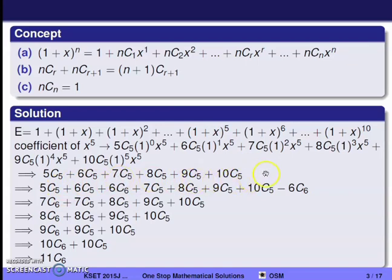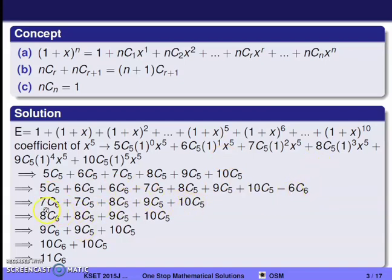We add and simplify. Using the concept nCr + nC(r+1) = (n+1)C(r+1): 6C5 + 6C6 = 7C6. Since 5C5 = 1 and 6C6 = 1, those cancel. Then 7C6 + 7C5 = 8C6, and 8C6 + 8C5 = 9C6, and 9C6 + 9C5 = 10C6.